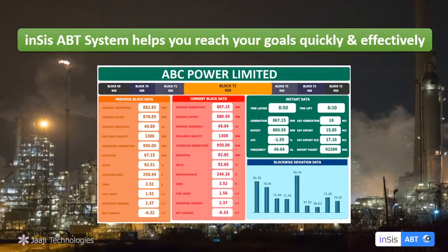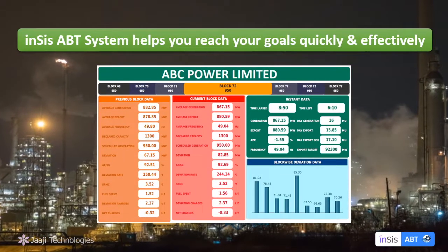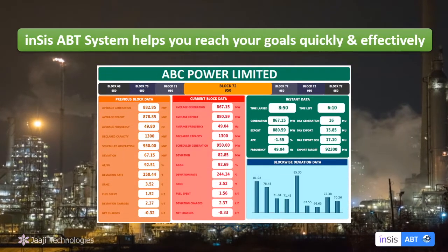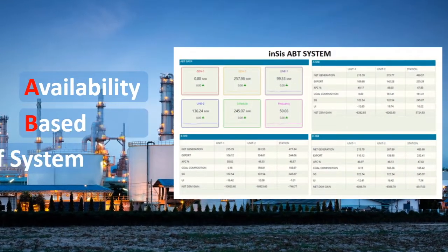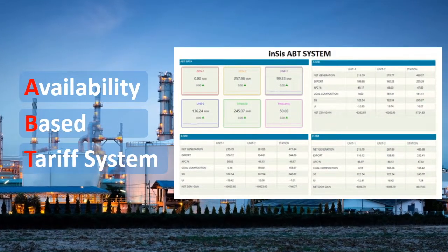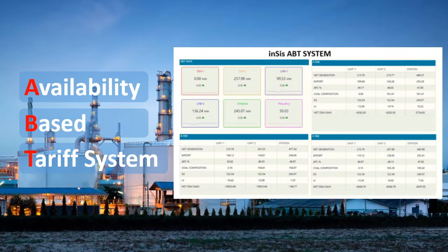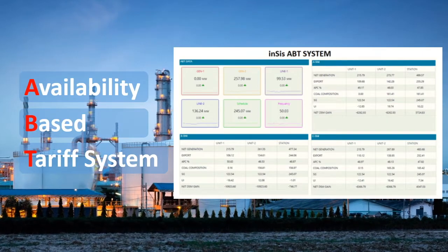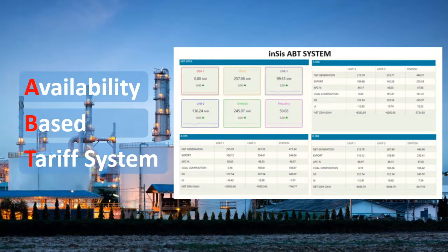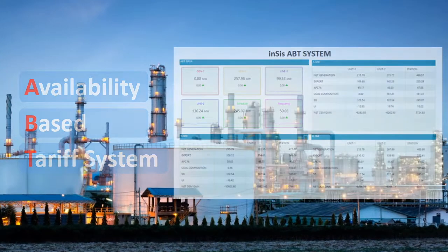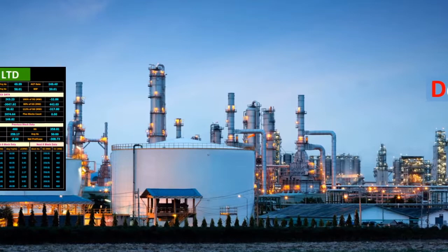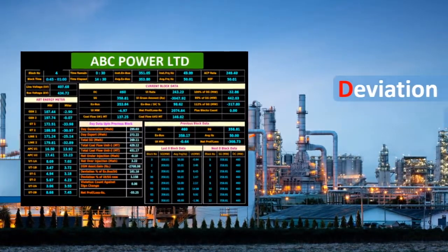INSYS's ABT system helps you reach your goals quickly and effectively. Implementation of the availability-based tariff system (ABT system) in the power generation sector has helped in narrowing the grid frequency and increasing stability.